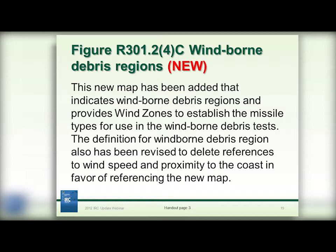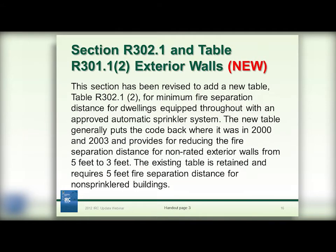Protection of glazing to resist impact from windborne debris must be designed in accordance with the large missile test of ASTM E1996, based on the wind zone shown in figure R301.2. The exception allowing the use of 7/16-inch wood structural panels to protect glazed openings remains in place but now references wind zones 1 and 2 in the new map, deleting mention of wind speed.